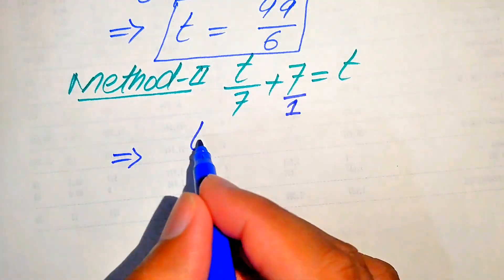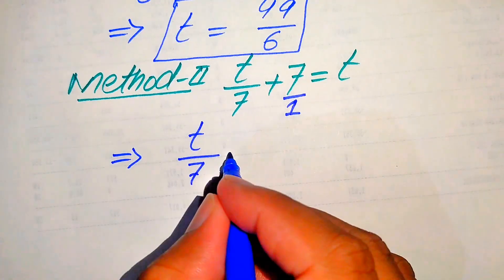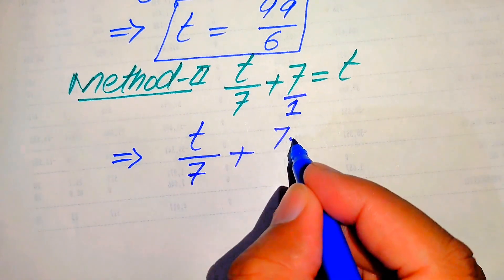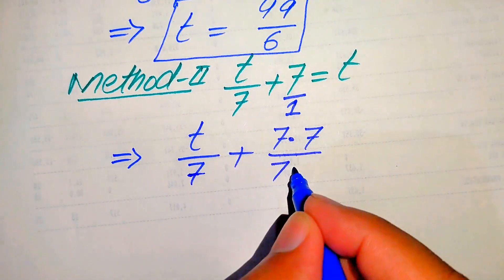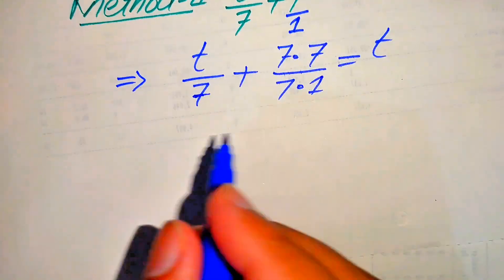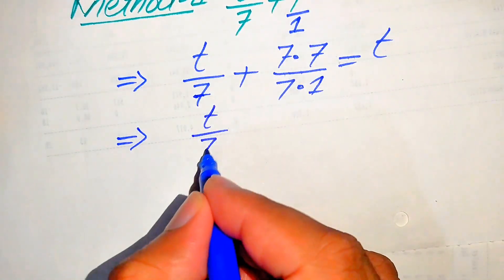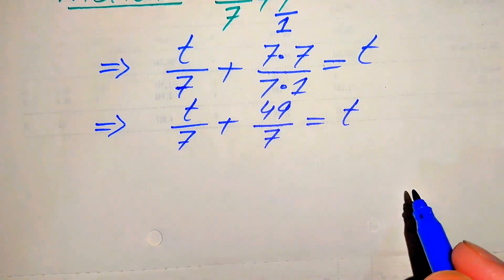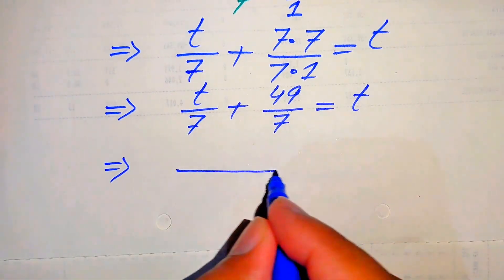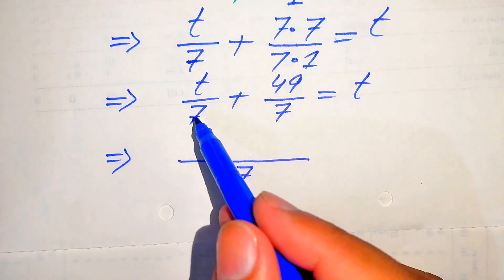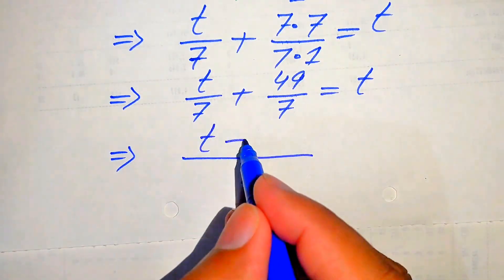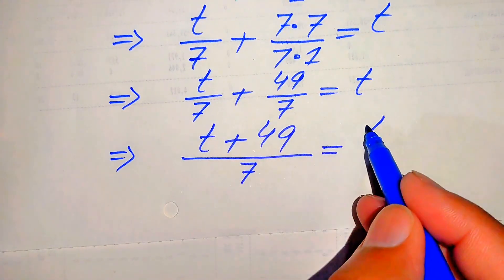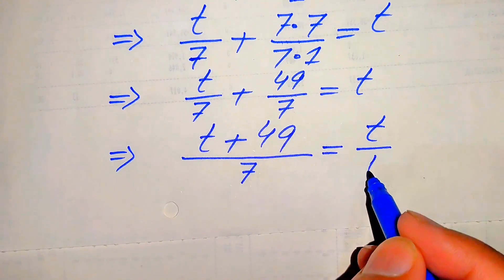In order to make the denominator 7, we multiply and divide the second term by 7, writing it as 7 multiplied by 7 divided by 7 multiplied by 1. This gives us t over 7 plus 49 over 7 equals t. Taking the LCM of 7, the 7s cancel and we get t plus 49 equals t, where the denominator of the right-hand side is 1.